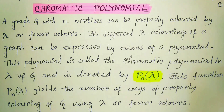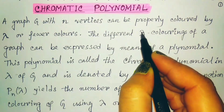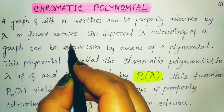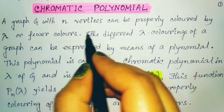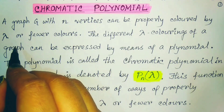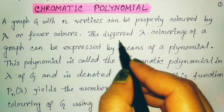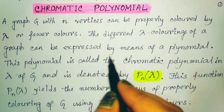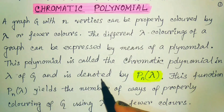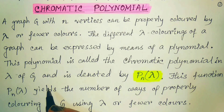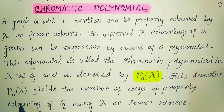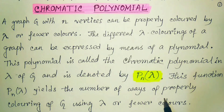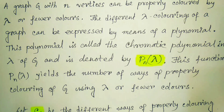So, what is Chromatic Polynomial? A graph G with n vertices can be properly colored by λ or fewer colors — λ is the number of colors. The different λ-colorings of a graph can be expressed by means of a polynomial. This polynomial is called the chromatic polynomial in λ of G, and it is denoted by P(n, λ). P stands for polynomial, n for the number of vertices, and λ is the number of colors used.